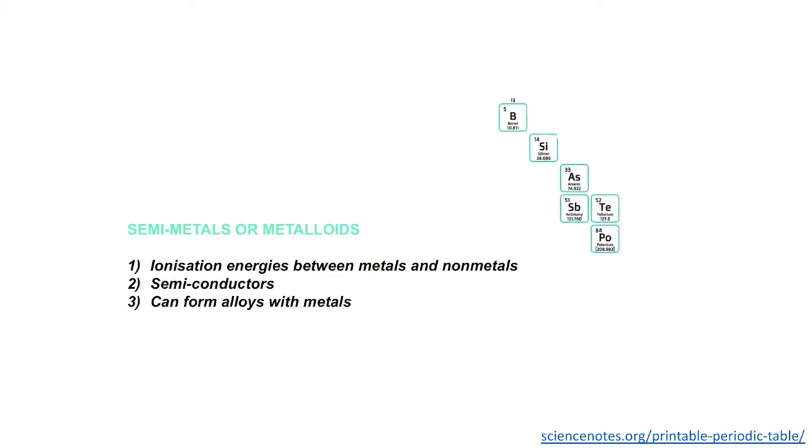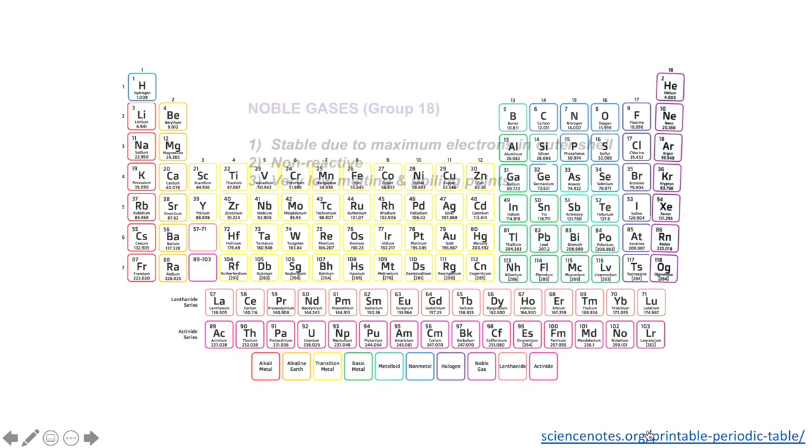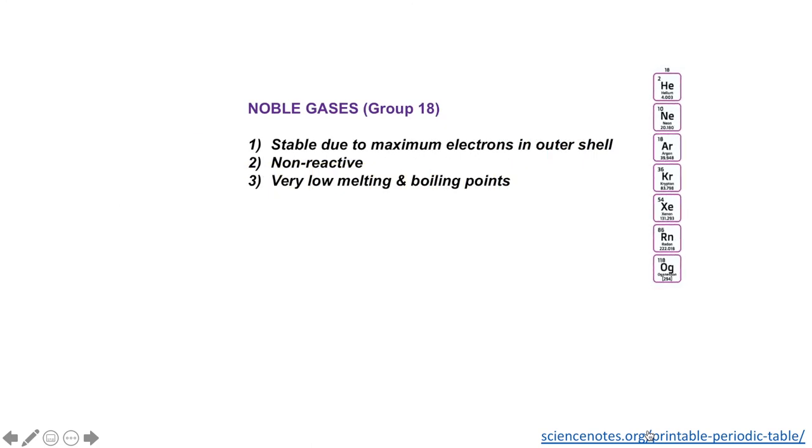Next we have what's known as semi-metals or metalloids. The properties of these elements are essentially intermediary between metals and non-metals, hence their name. These often form alloys with other metals and are generally good semiconductors. Then we have the halogens in group 17. These are reactive non-metals, highly reactive because of their valence electron configuration. They have essentially one electron missing from the outermost shell, which makes them highly reactive, highly electronegative. Then we have the noble gases in group 18. These are called noble because they're very non-reactive. They're stable because their outer electron shell has the maximum number of electrons possible. We also have very low melting and boiling points.